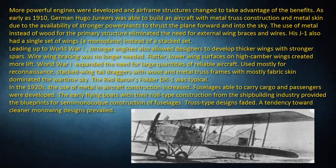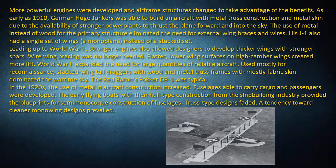WWI expanded the need for large quantities of reliable aircraft. Used mostly for reconnaissance, stacked wing tail draggers with wood and metal truss frames with mostly fabric skin dominated the wartime sky. The Red Baron's Fokker DR1 was typical. In the 1920s, the use of metal in aircraft construction increased. Fuselages able to carry cargo and passengers were developed. The early flying boats with their hull-type construction from the shipbuilding industry provided the blueprints for semi-monocoque construction of fuselages. Truss-type designs faded, and a tendency toward cleaner mono-wing designs prevailed.